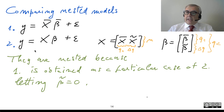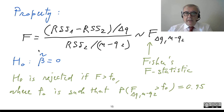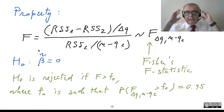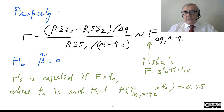We have a very interesting property: the residual sum of squares for model 1 minus the residual sum of squares for model 2 — the second model has more parameters, so its RSS is smaller and this difference is always positive — divided by delta-Q, over the residual sum of squares for model 2 divided by N minus Q2.